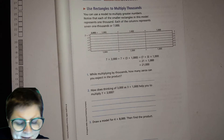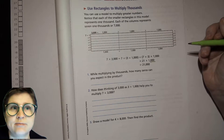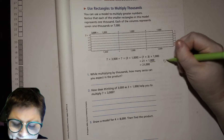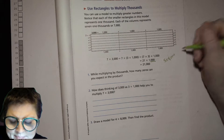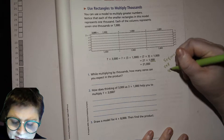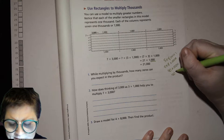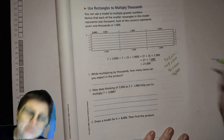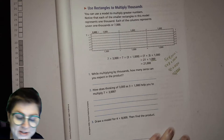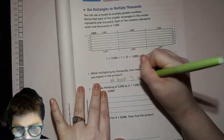Number one: when multiplying by thousands, how many zeros can you expect in the product? Because the number 1,000 has three zeros, I want to say three. But then I had a thought — what about 5 times 8,000? What is 5 times 8? 40. So 5 times 8,000 is going to be 40 with those three zeros, which means I don't only want to expect three zeros. I want to expect at least three zeros.